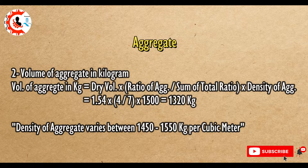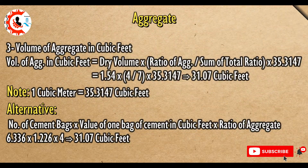Density of aggregate varies between 1450 to 1550 kg per cubic meter. Volume of aggregate in cubic feet equals dry volume multiplied by ratio of aggregate divided by sum of total ratio, multiplied by 35.3147. 1.54 × (4/7) × 35.3147 equals 31.07 cubic feet.